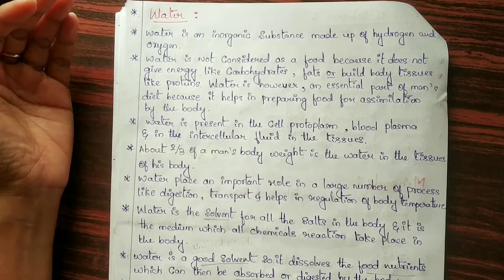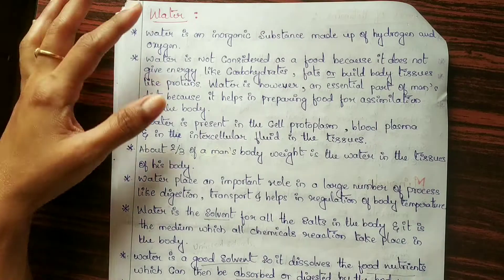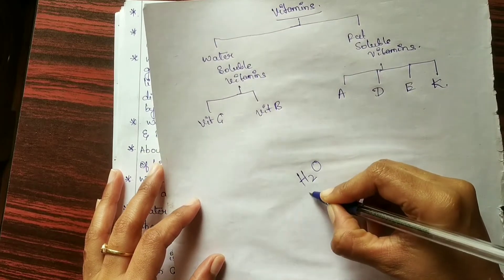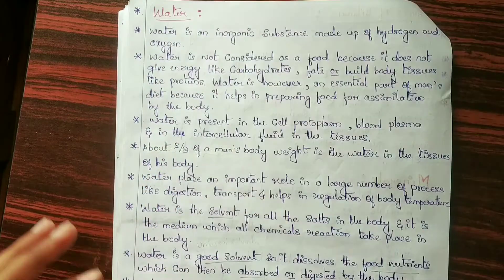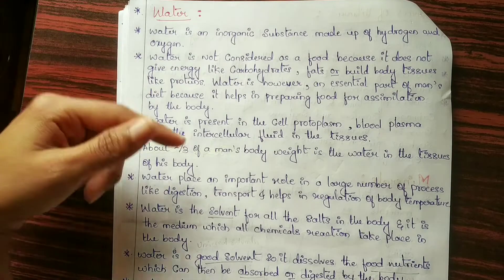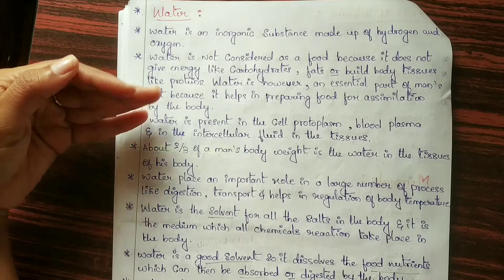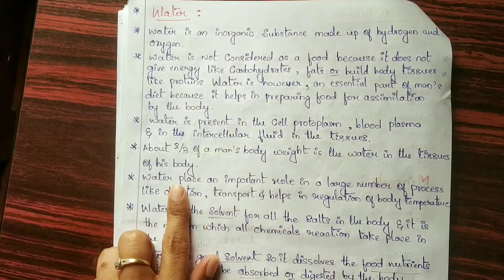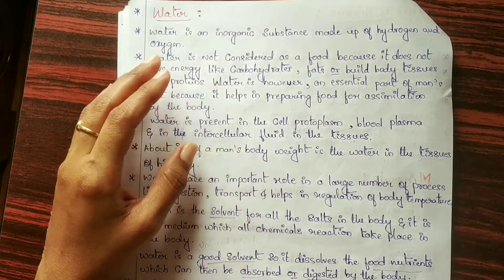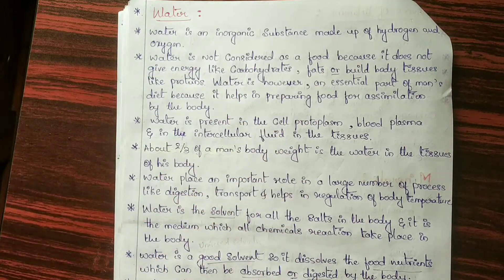Water, as we know, is composed of hydrogen and oxygen — it is H2O. About two-thirds of a man's body weight is water, present in the tissues of his body. Water plays an important role in a large number of processes like digestion and transport, and helps in regulation of body temperature.